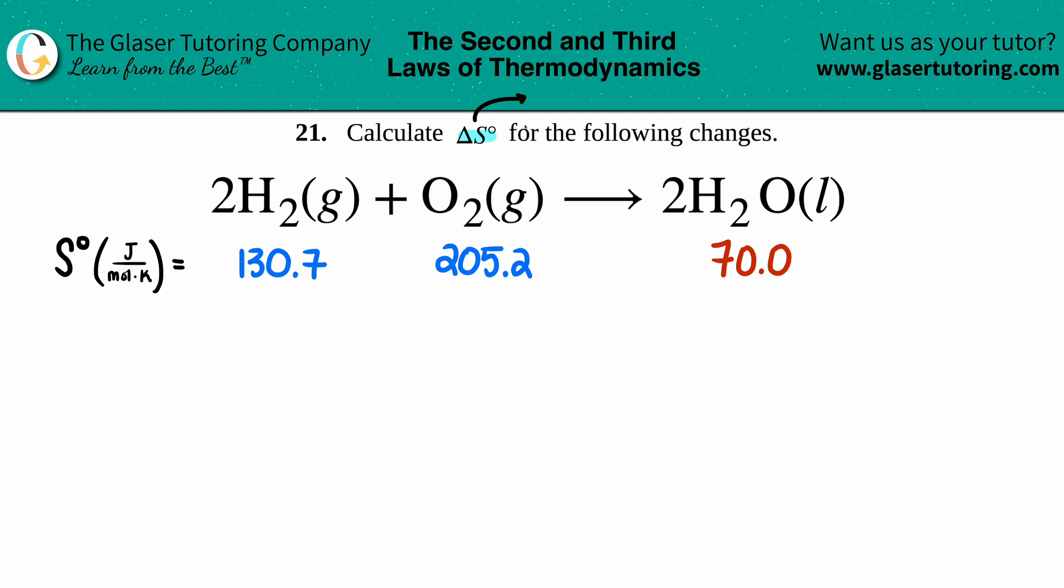Delta S—remember, a triangle or delta is always the change—so the change in entropy. Entropy is your S value. This little notch here just says we have to be under standard conditions, and anytime we're talking about standard conditions, we're talking about appendix values in the back of a textbook. So I went to the back of the textbook to find out what the S values are for each component in my equation.